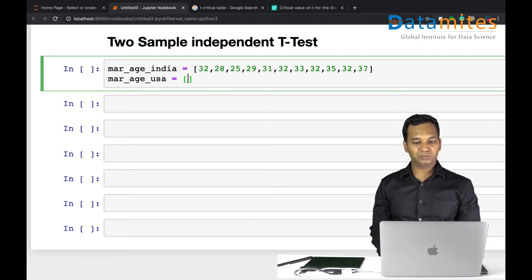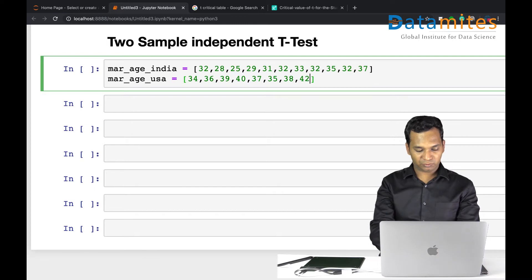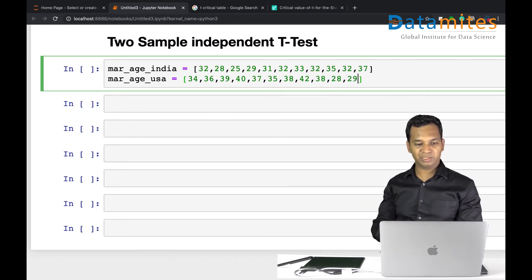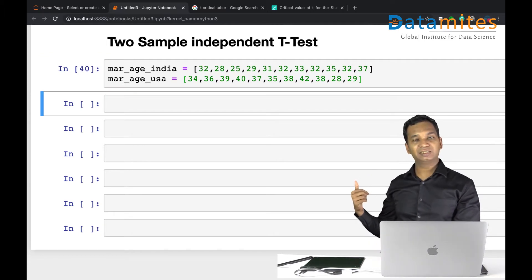Usually they marry a bit late when compared to Indians, so I'm going to again guess or assume the data. So let's say 34, 36, 39, 40, 37, 35, 38, 41, 42, 38, maybe some are marrying early as well, 28, 29. Okay, that's good enough.